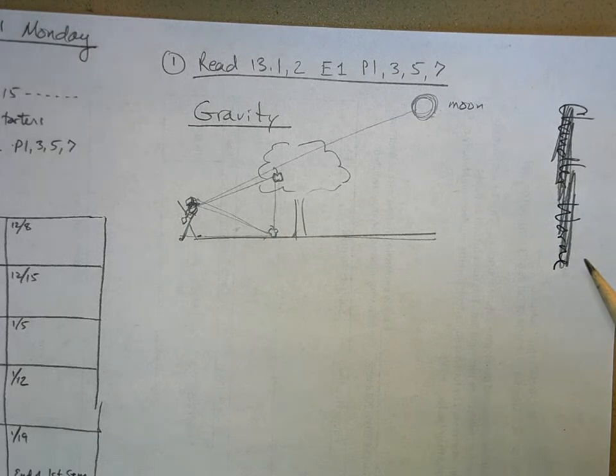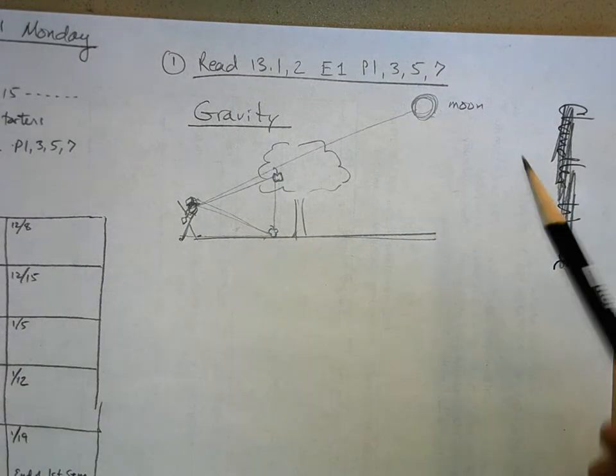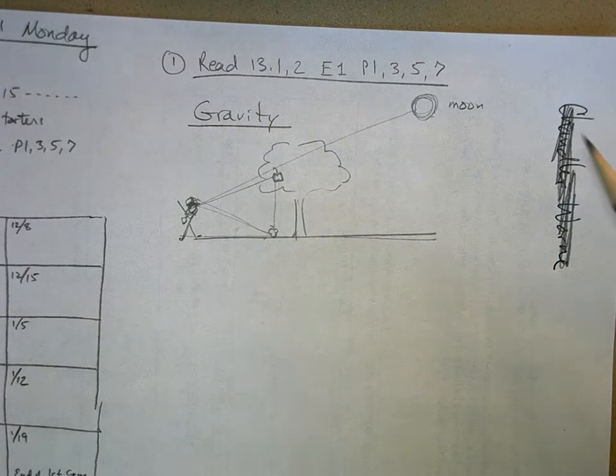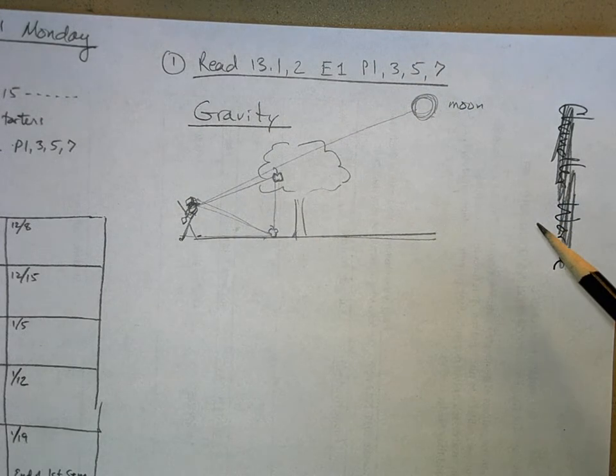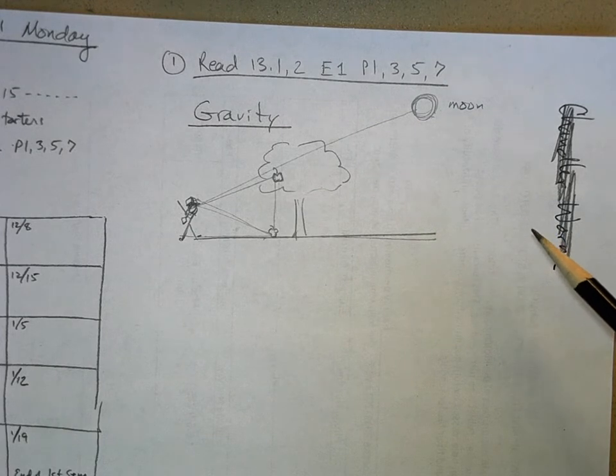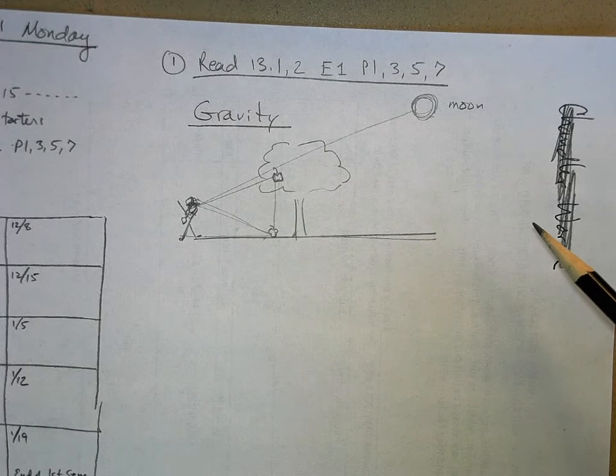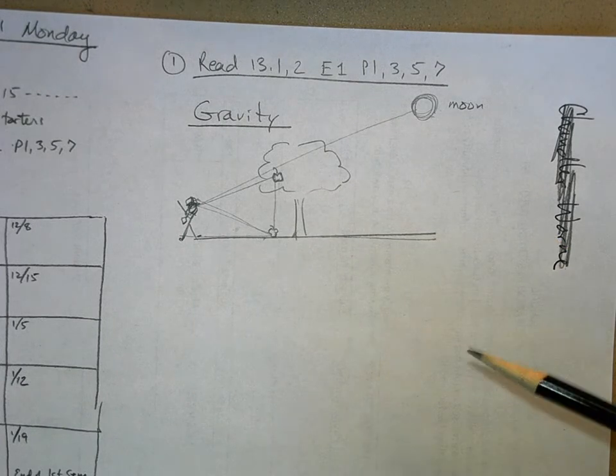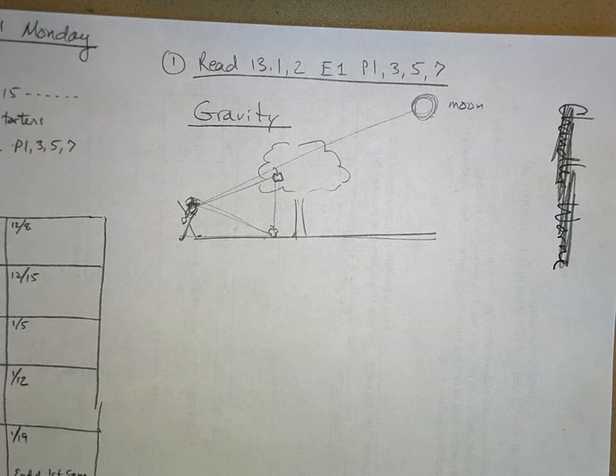And of course he figured all this out while he was out on the orchard, I guess, avoiding the plague in London and had nothing else to do, so he decided to describe gravity. And so that's what we're going to do right now. Now here's the thing you need to know about this description of gravity.